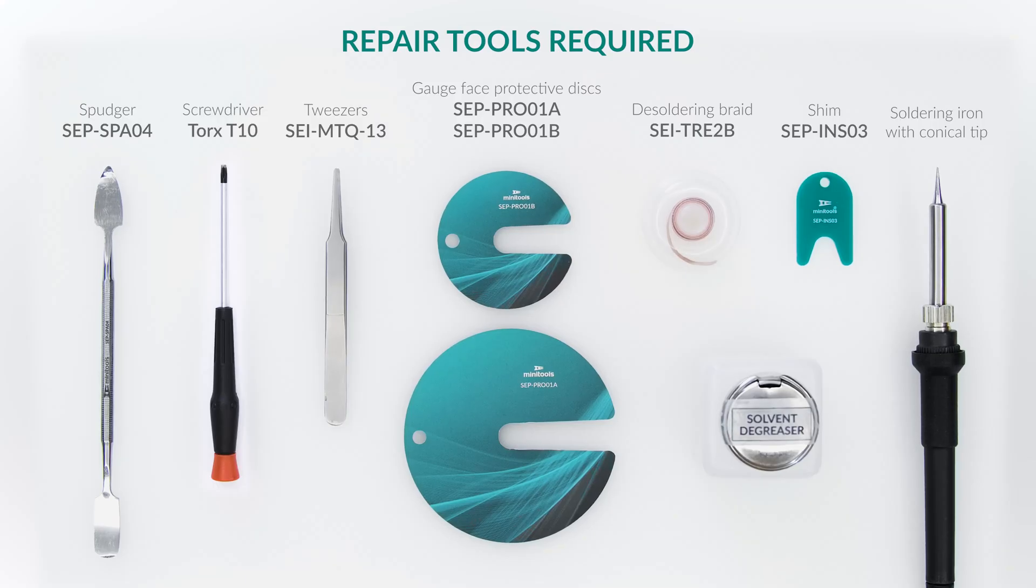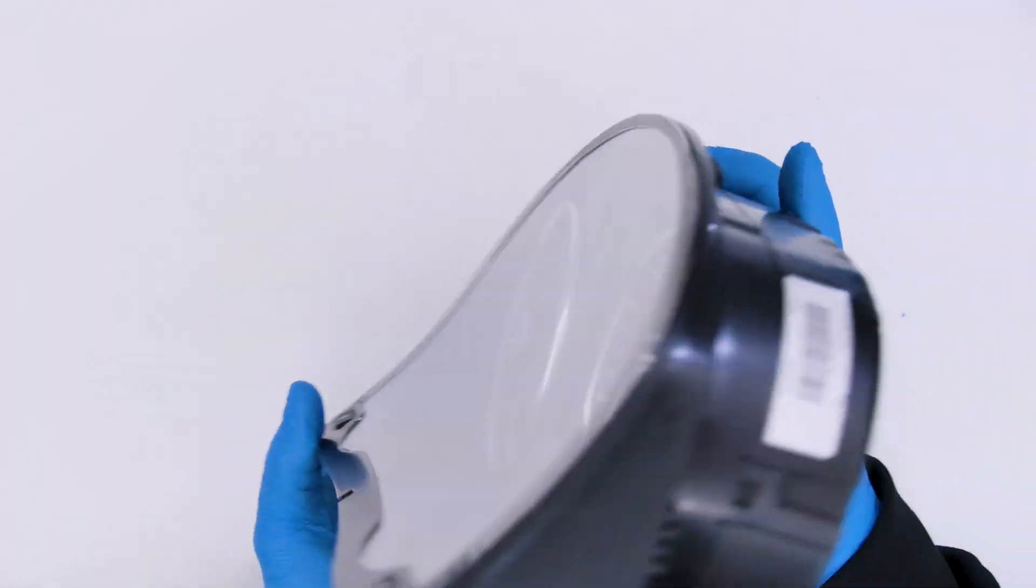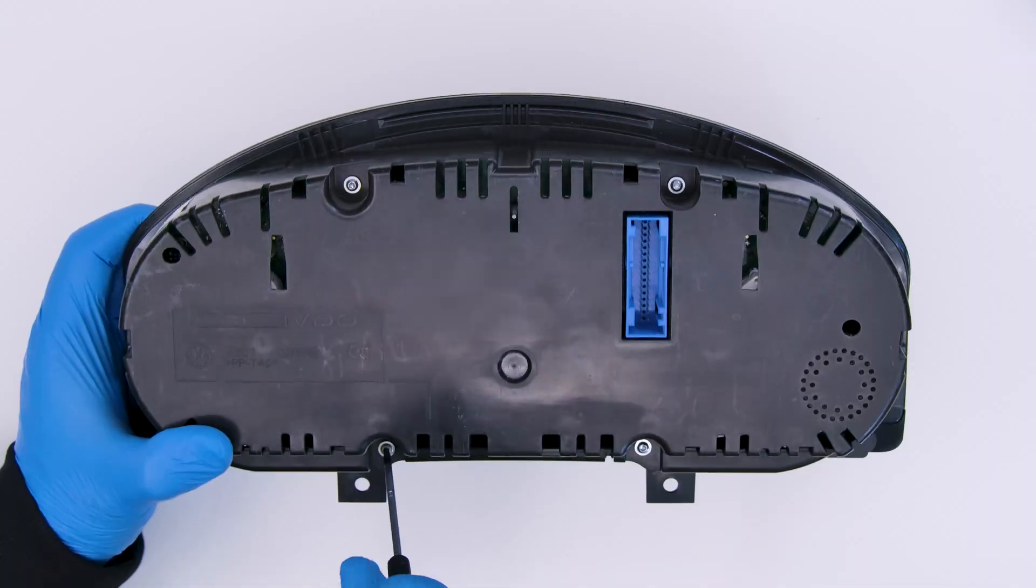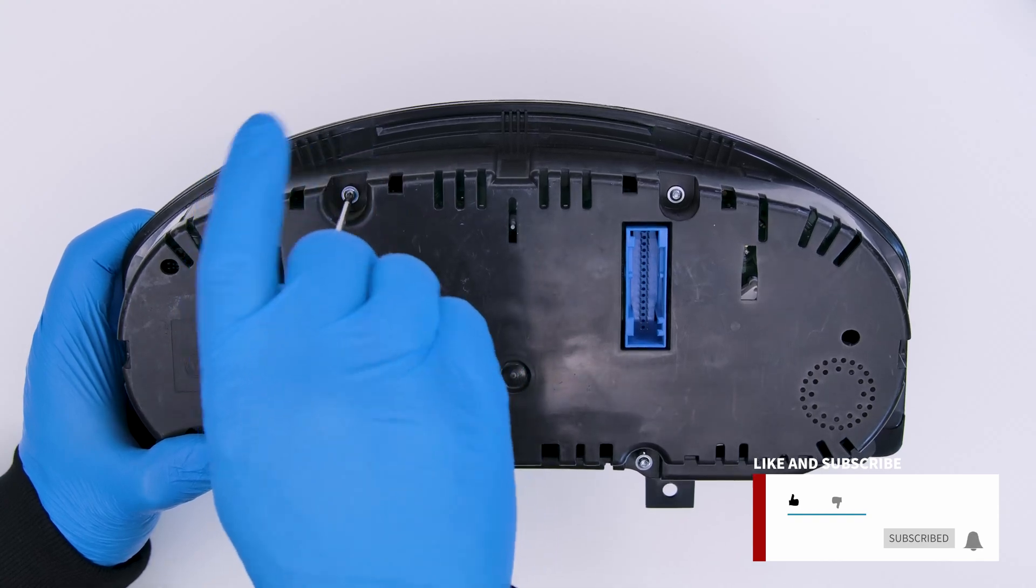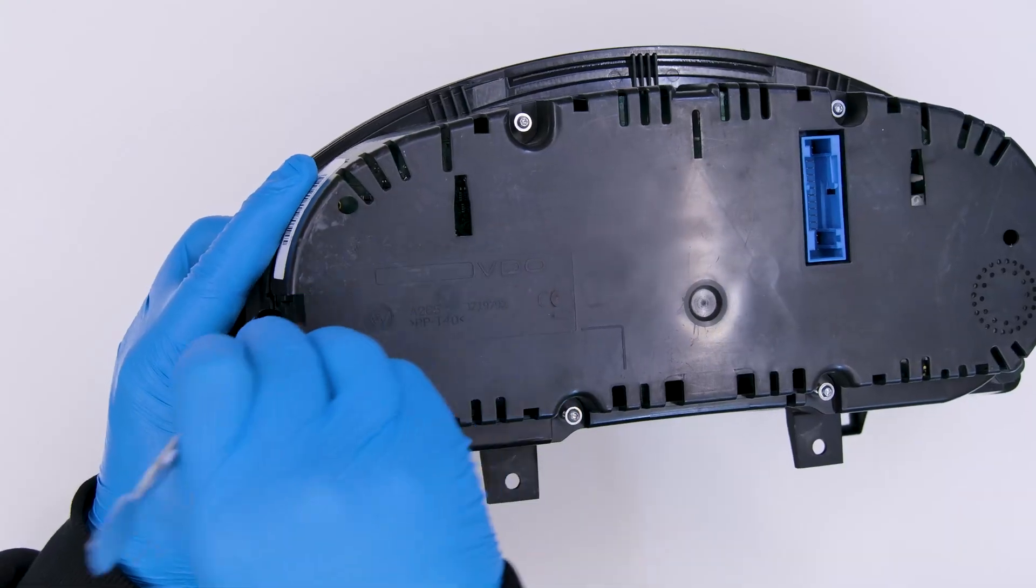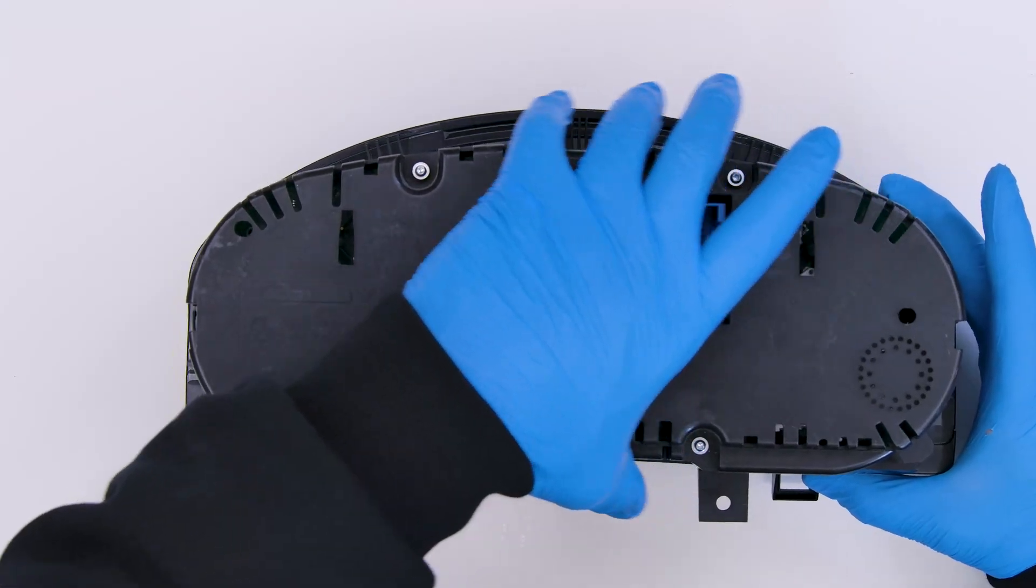For this repair, you will need the following tools. Position the dashboard as shown and undo the rear screws. With the head of the spudger, leverage on the side clips to remove the rear cover.